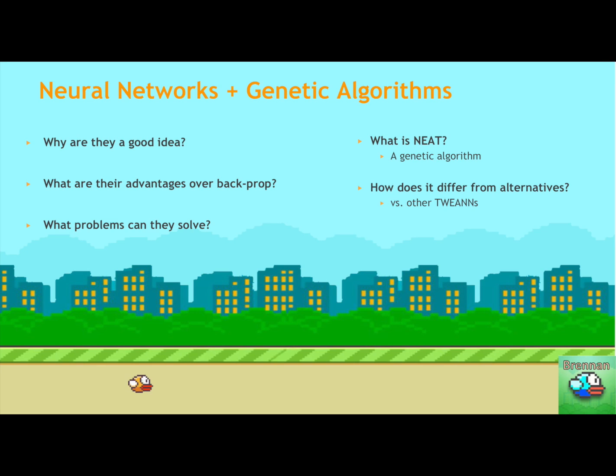So NEAT stands for neural evolution of augmenting topologies. And it differs from TWEENS, which stands for topological weight evolution of artificial neural nets. And basically, it stands for when there's a difference between a fixed topology or an augmenting topology. So with NEAT, we allow a more complex structure, meaning an addition of neurons and genes, to arise.